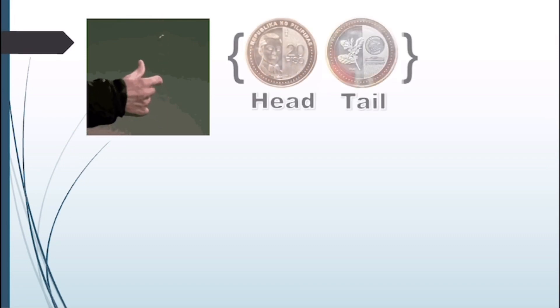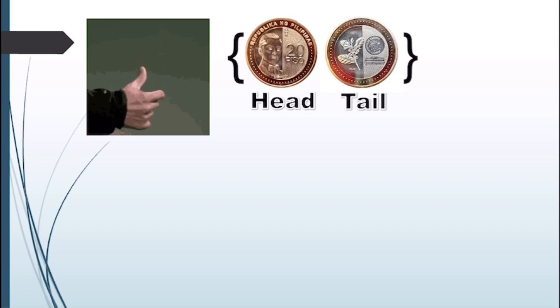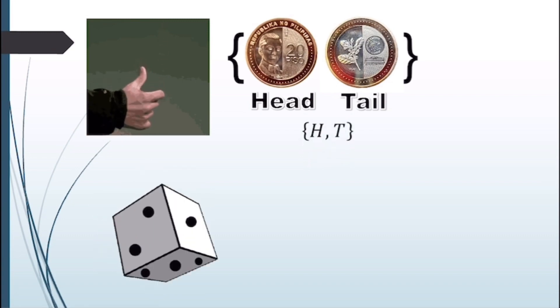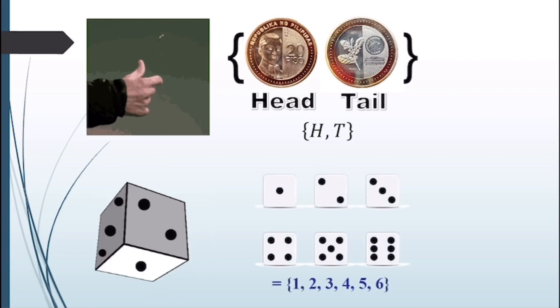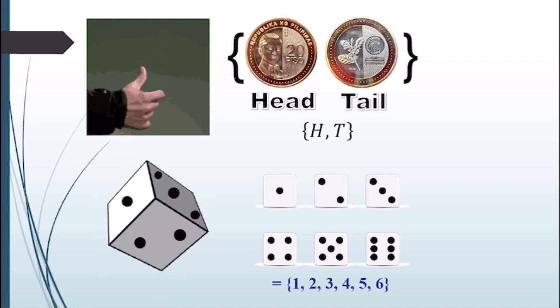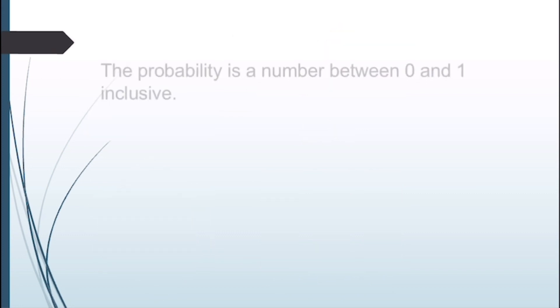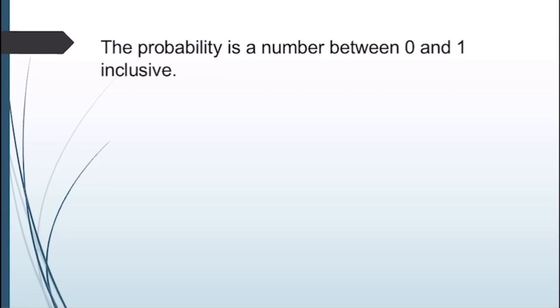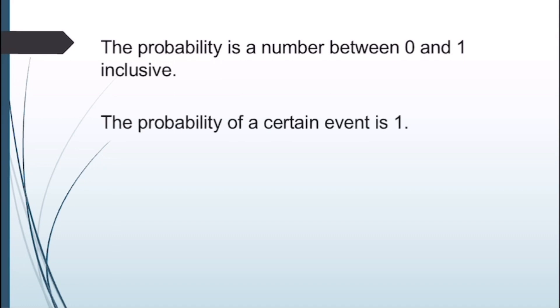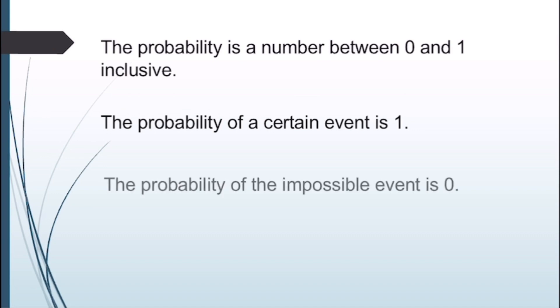A simple event is one where all possible outcomes are equally likely to occur. A good example is tossing a coin — there are two possible outcomes: head or tail, and the probability of each is equal. Likewise, when you roll a die, you can get any of the six numbers from one to six, and the chance of any one of those numbers is equal to the others. Probability does not tell us exactly what will happen; it is just a guide. Note: the probability of any event is a number between zero and one inclusive. The probability of a certain event is one, meaning it is sure to happen. The probability of an impossible event is zero, meaning the event cannot happen.